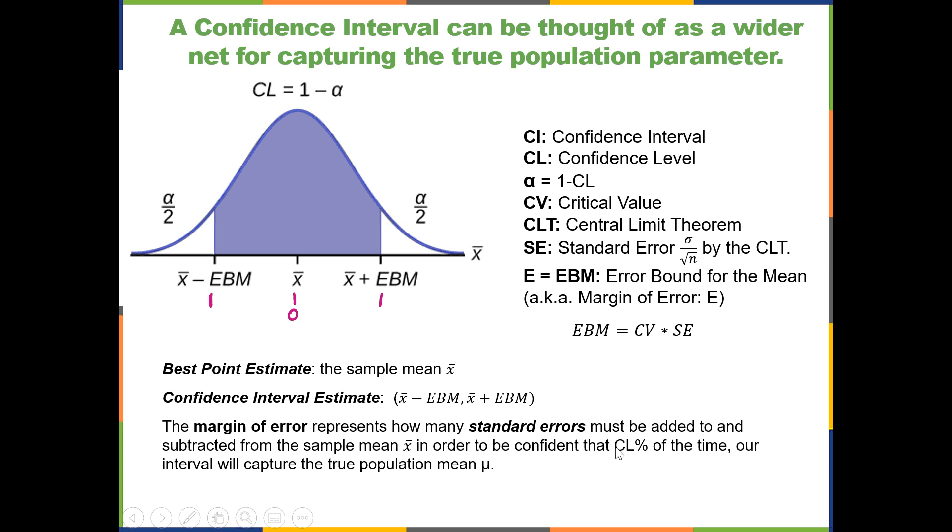That percentage of the time, our interval will capture the true population mean, mu. In this image, you see a bell curve with an area in the center, which represents your confidence level. So if it's a 95% confidence level, that will be a 0.95 area in here.